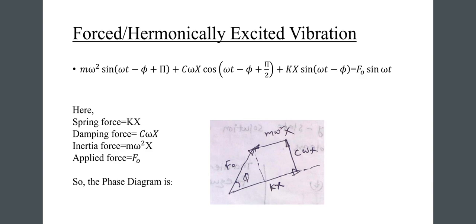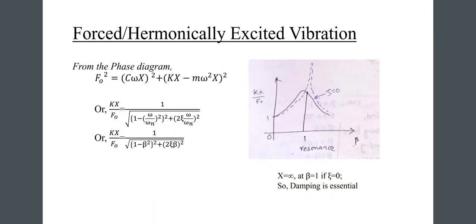From the figure: spring force equals k·X, damping force equals c·omega·X, inertia force equals m·omega-squared·X, and the applied force equals f-naught, with phase angle phi. From the phase diagram: f-naught-squared equals (c·omega·X)² plus (k·X minus m·omega-squared·X)². Therefore, k·X divided by f-naught equals 1 over...